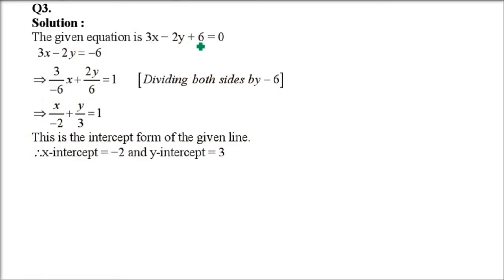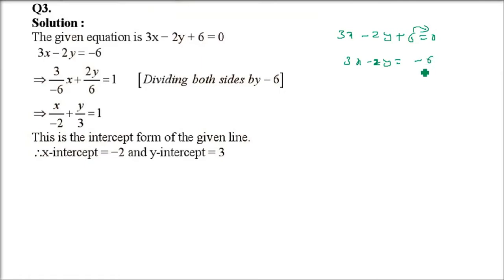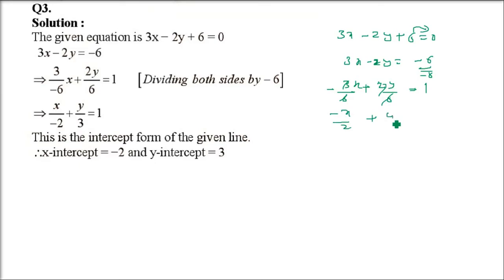Question 3: reduce 3x - 2y + 6 = 0 to intercept form and find the x and y intercepts. Take 6 to the right-hand side: 3x - 2y = -6. Divide every term by -6 to get 1 on the right-hand side: (-3/6)x + (2/6)y = 1, which simplifies to x/(-2) + y/3 = 1. So a = -2 and b = 3.